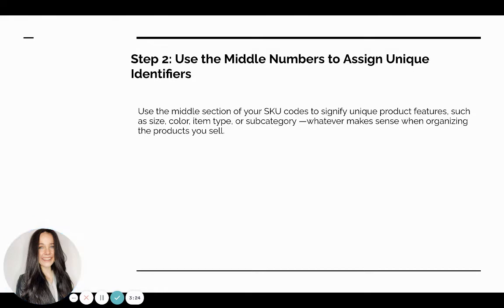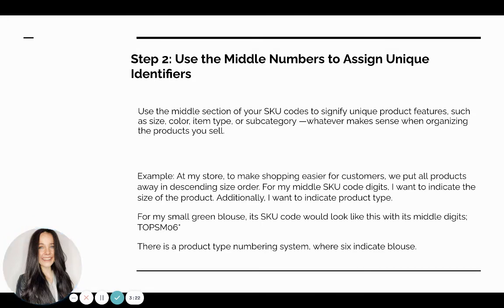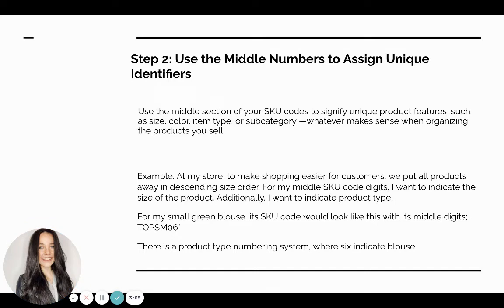Returning to the example of the green blouse: I want to make shopping easier for customers, so we put everything away in size order. For my middle SKU digits, I want to indicate the size of the product and the product type. So for my small blouse, after 'TOP' my middle indicators would be 'SM' for small, and 'O6' indicating the product type — assuming I've created a numbering system alongside my products to go with my SKU codes.